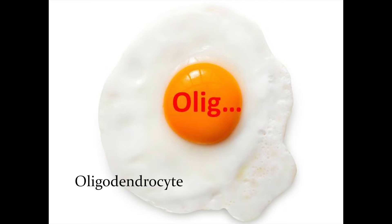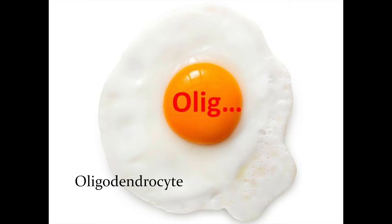Now the oligodendroglioma — it says dendrocyte but it's the oligodendroglioma. Why is it looking like that? This is rare, slow-growing. It's the fried egg appearance — because it has round nuclei and a clear cytoplasm. Where was it mostly found? It's mostly found in the frontal lobe. So now we have four things: glioblastoma, meningioma, schwannoma, and oligodendroglioma.